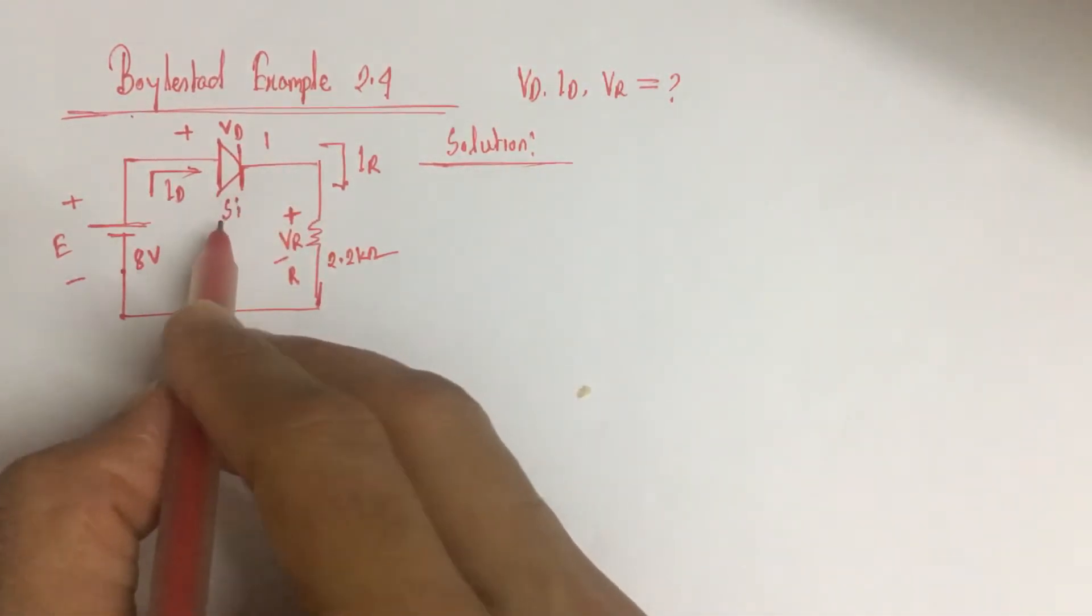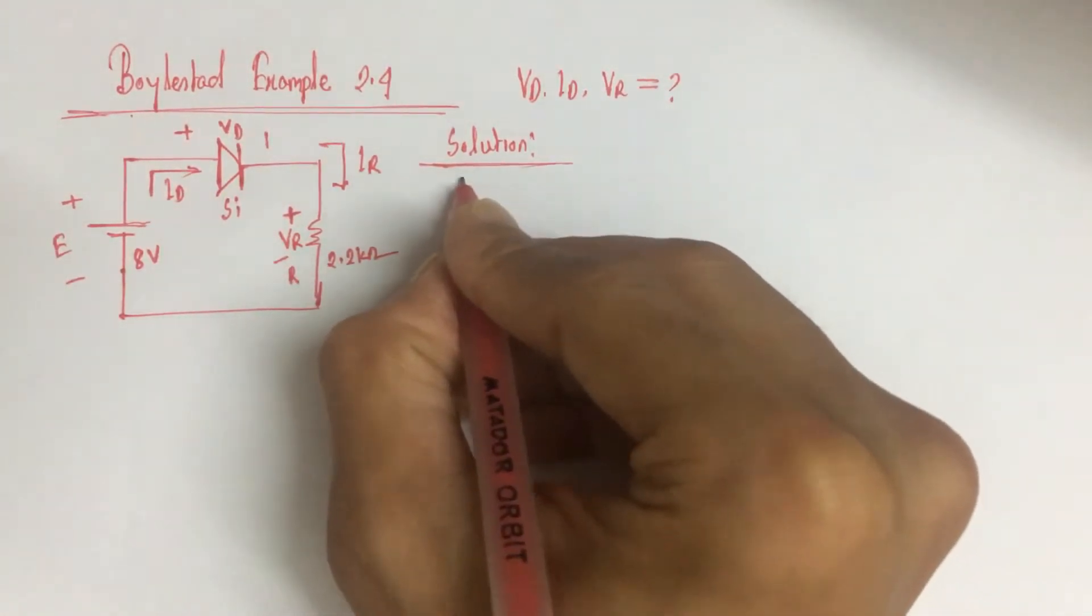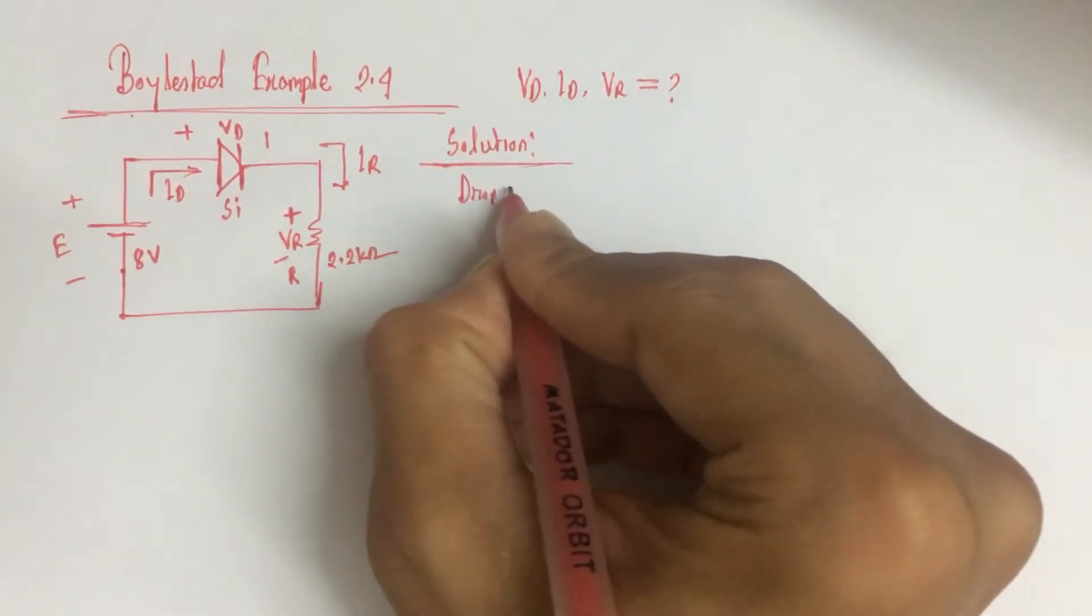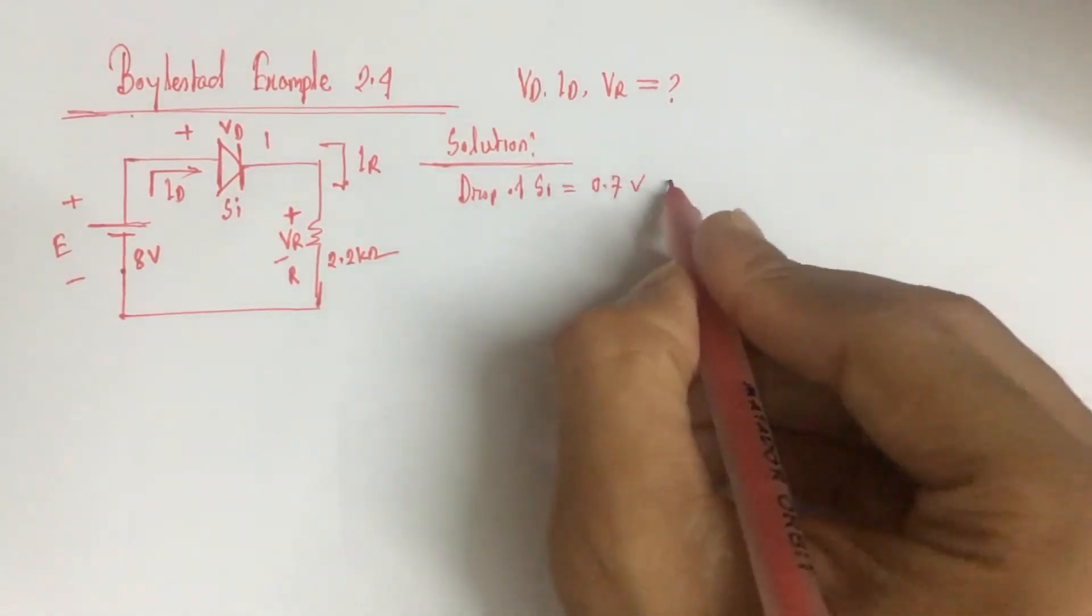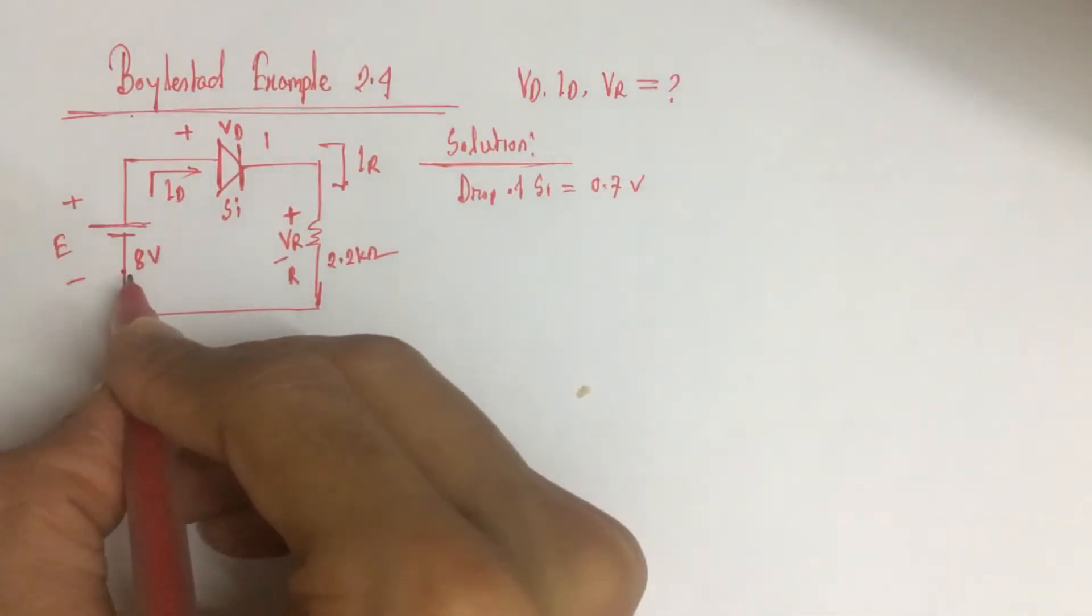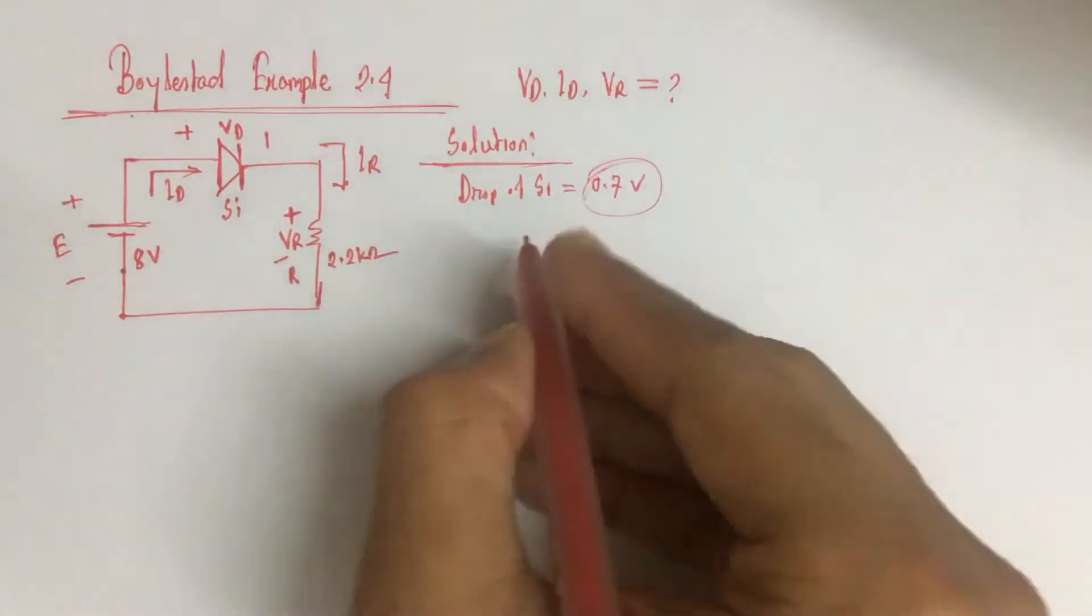So the voltage drop across this silicon diode is fixed, which is 0.7 volt. So the forward biasing voltage, 8 volt, is higher than 0.7 volt. So the diode is on.